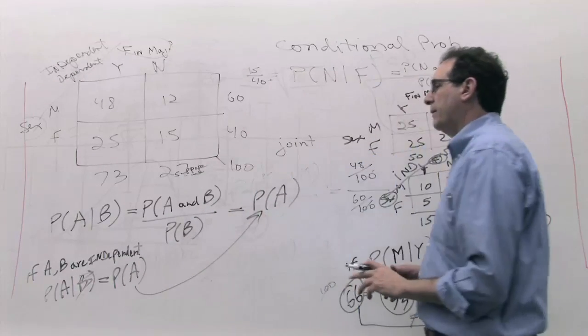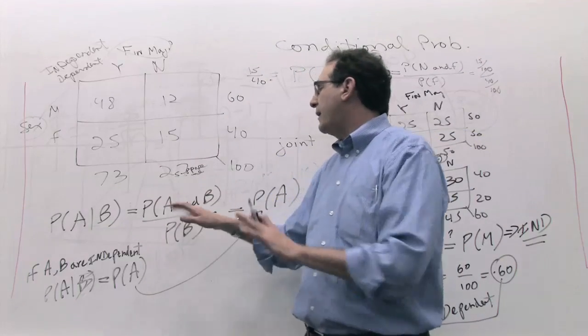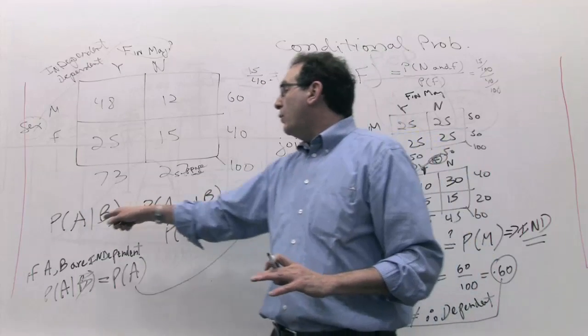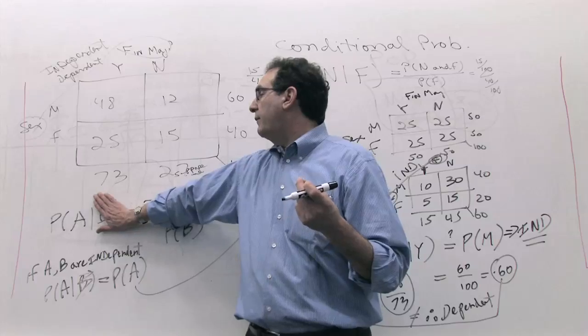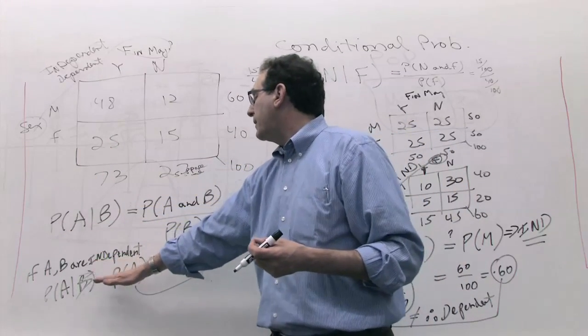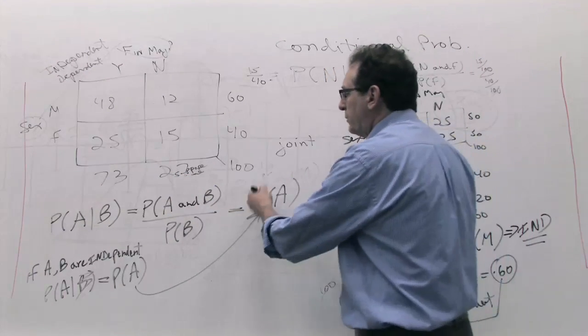Let's bring it up over here. A given B, we know by its very definition is A and B divided by B, that's not a question. But if we also say that A and B happen to be independent events, then the B is irrelevant. So P of A, the left side could be A by itself. The right side doesn't change.